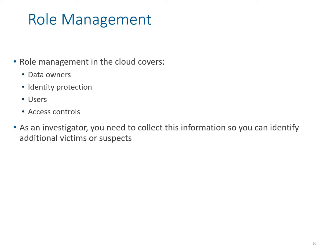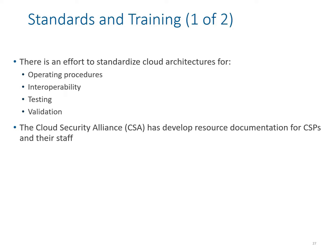Role management in the cloud covers data owners, identity protection, user access control lists, and access privileges and restrictions for each user. As an investigator, you need to collect this information to identify additional victims or suspects. Identity protection means determining whether sensitive personally identifiable information (PII) was compromised, which broadens the investigation scope. You may also need to determine whether a PII compromise was intentional or accidental, and knowing cloud users' access permissions can assist in this task.